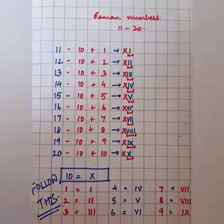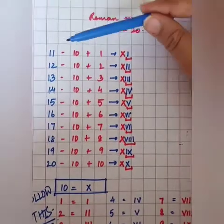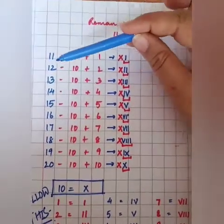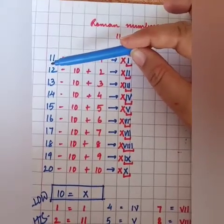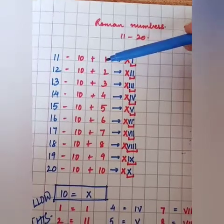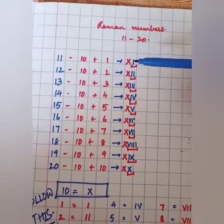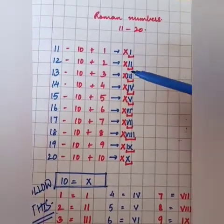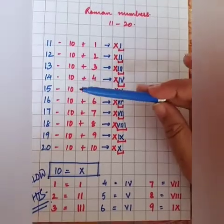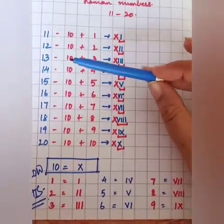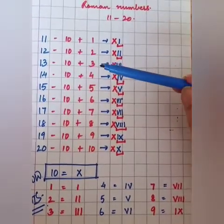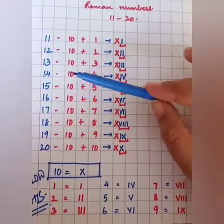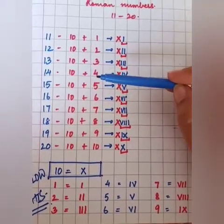Now dear students, let's start with numerals 11 to 20. Whenever we do Roman numerals, the easiest way is to make the expanded form first. For 11: 10 plus 1, so X for 10 and I for 1. For 12: expanded form 10 plus 2, so X for 10 and II for 2. For 13: 10 plus 3, so X for 10 and III. For 14: 10 plus 4, so X for 10 and IV for 4.